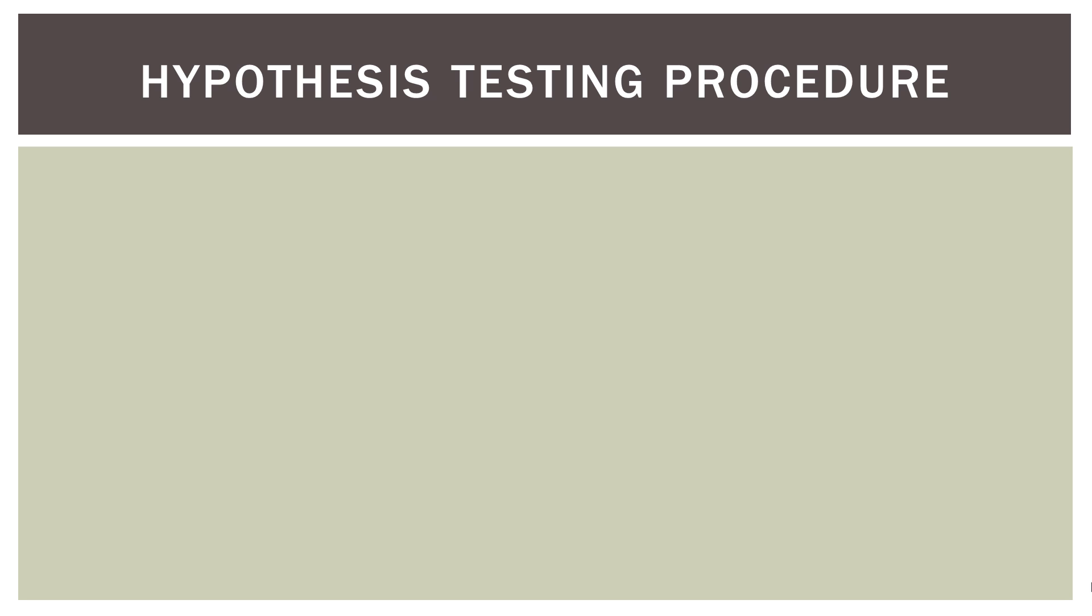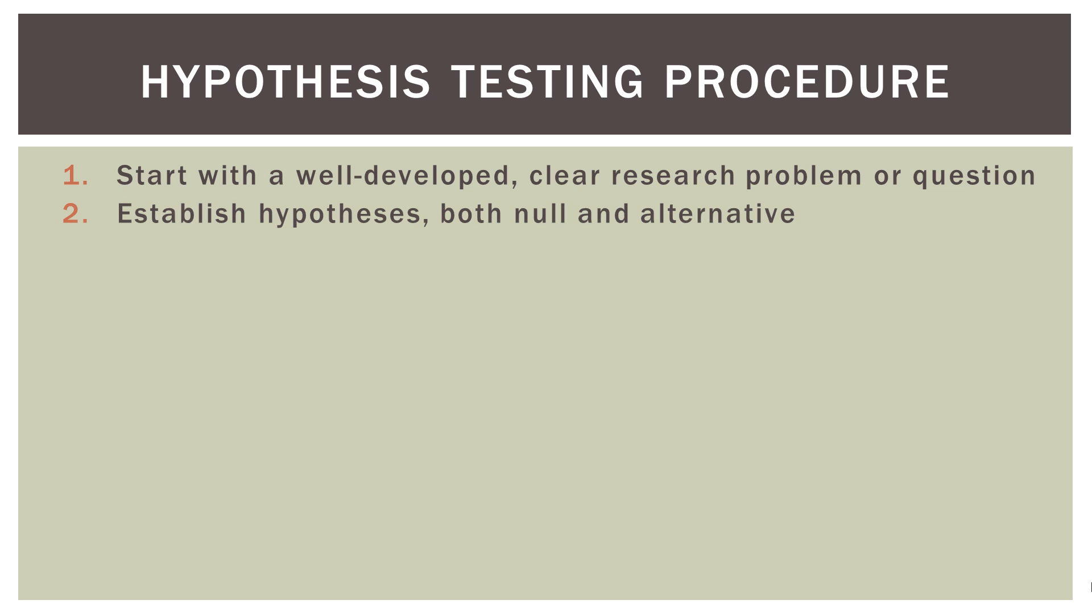Now it's very important to point out, the hypothesis tests follow a very prescribed procedure. Now, as usual, it always starts with a well-developed, clear research problem or analytical question. If the problem is poorly thought out, if what you're trying to accomplish is unclear, then no amount of statistics is going to be able to solve that and it can actually make it worse. So always think through what you're trying to find out at the problem stage. Now once you have that, we always establish our hypotheses, both the null and the alternative. So remember, the null and the alternative are complete opposites of each other, and they must account for all possible outcomes.